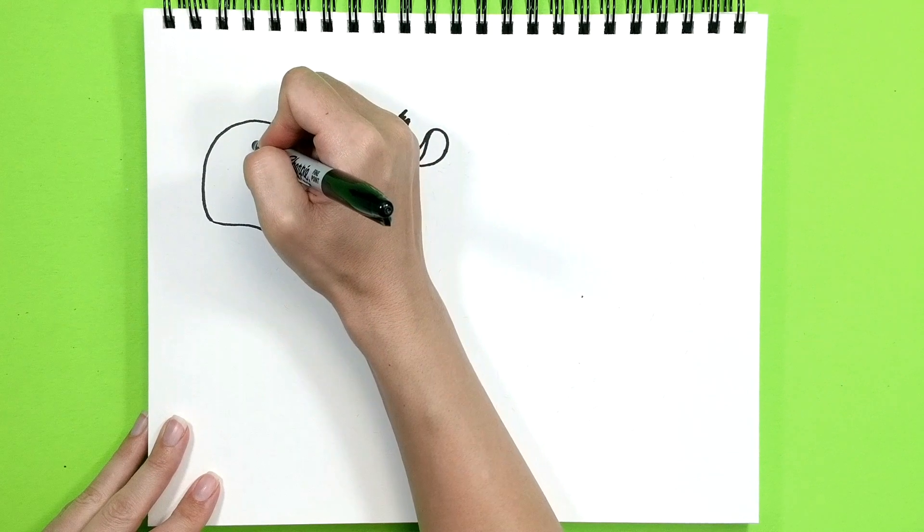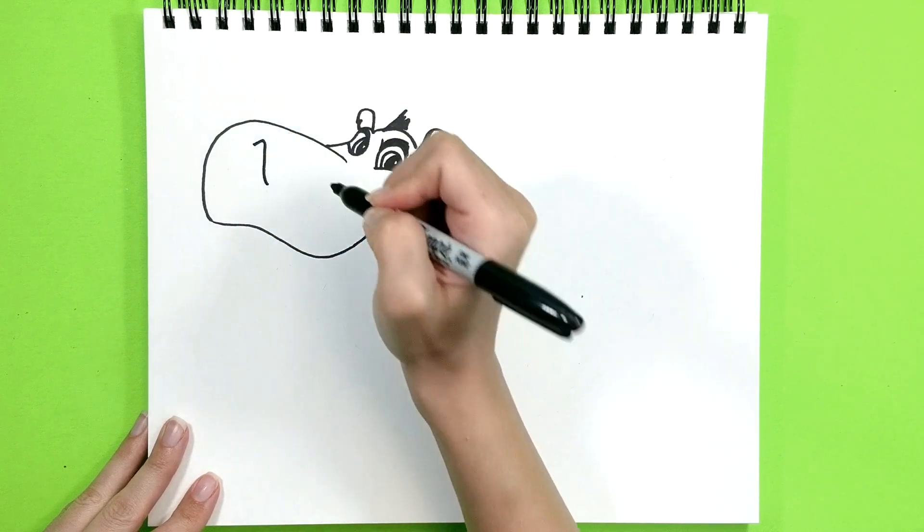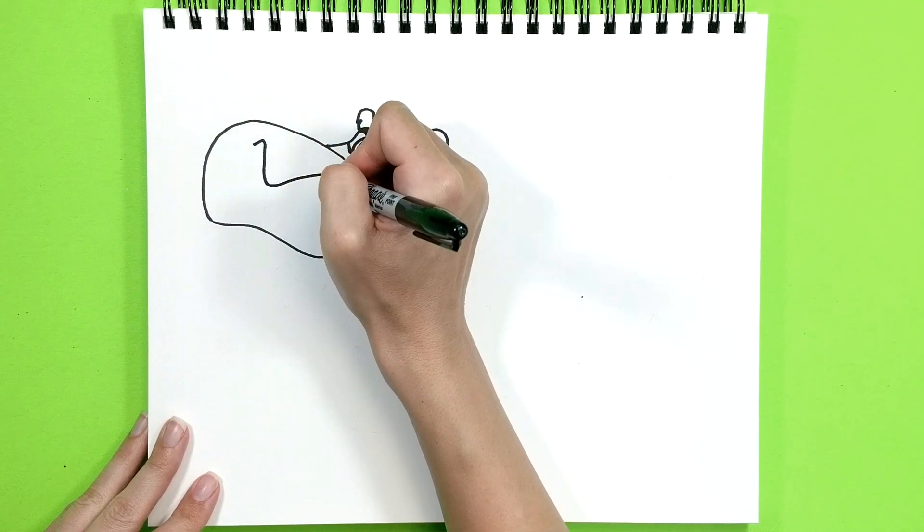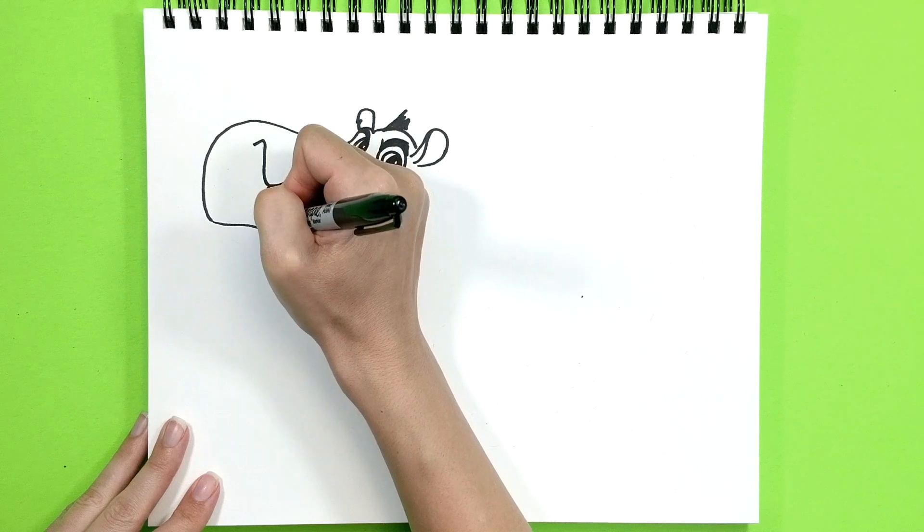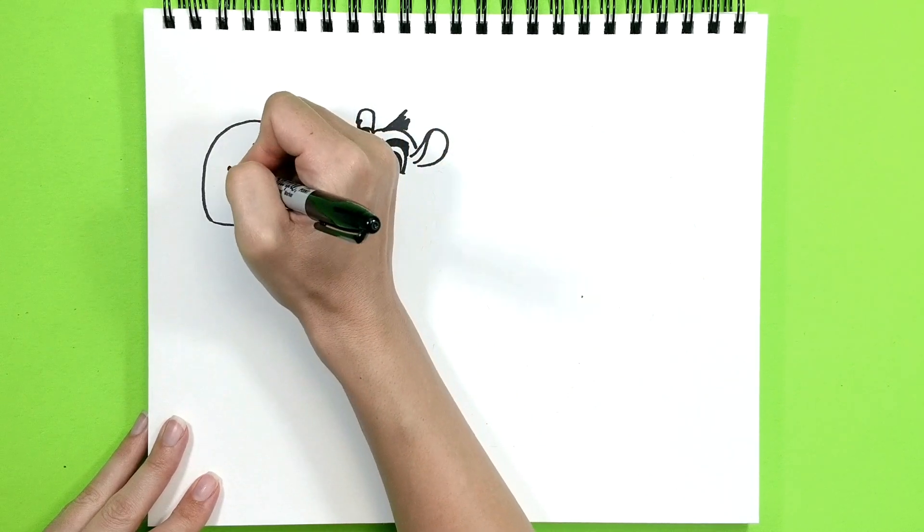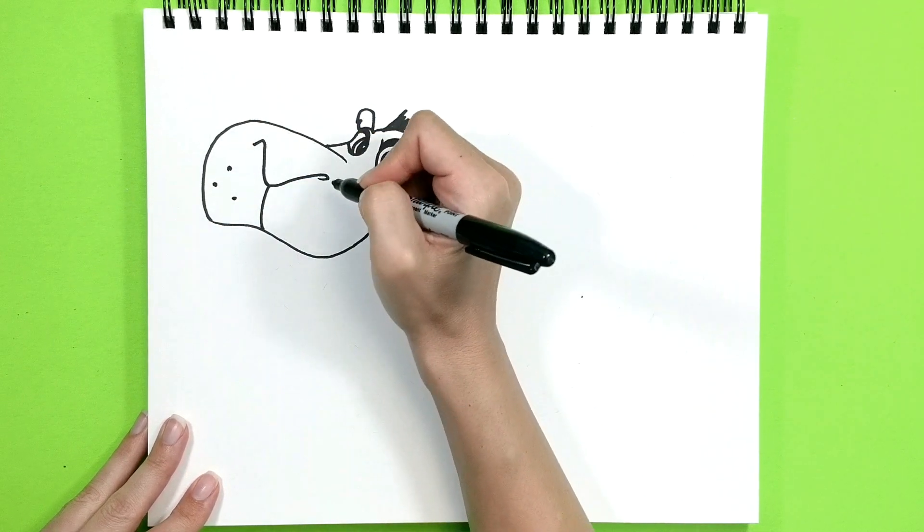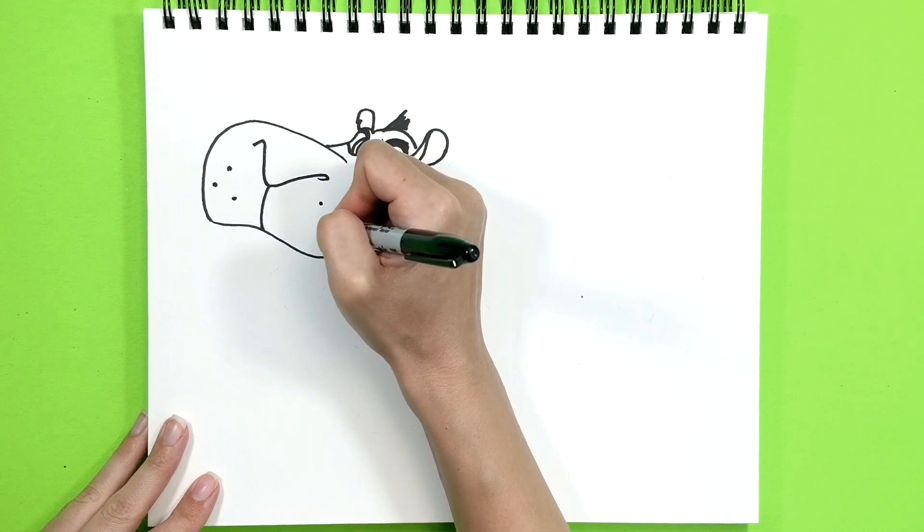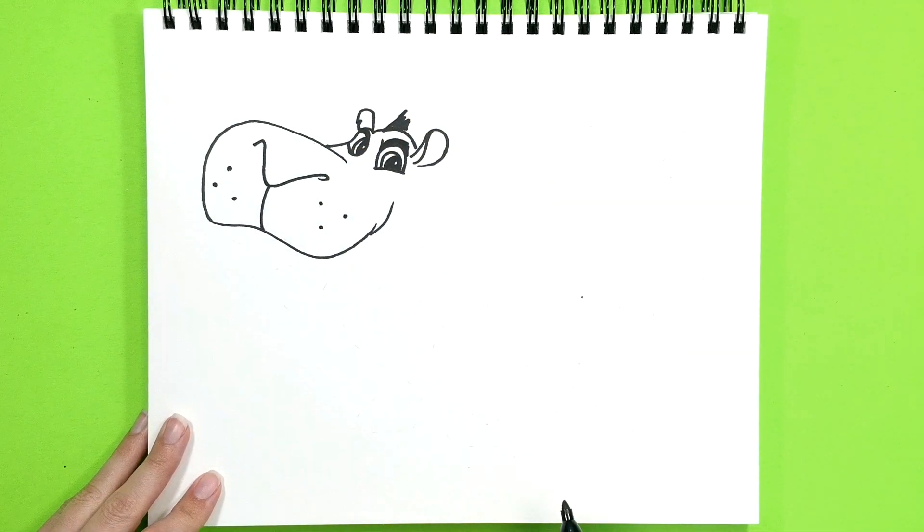Now he has a big nose. Here we go. Little dots. He has tiny whiskers, but we can't really see them. So we'll just do little dots where his whiskers would be.